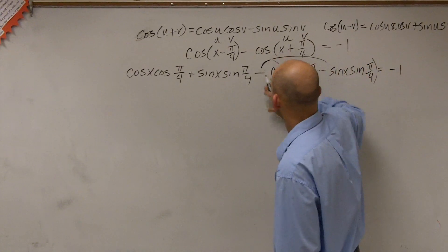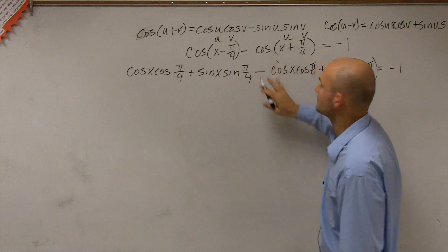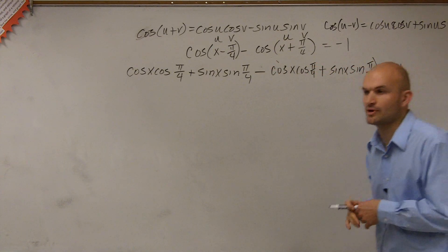Therefore, we could say this is now going to be negative, and this will be positive. OK? So by distributing the negative sign, I can now get rid of my parentheses.